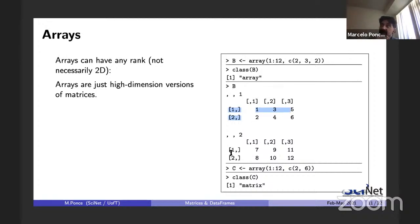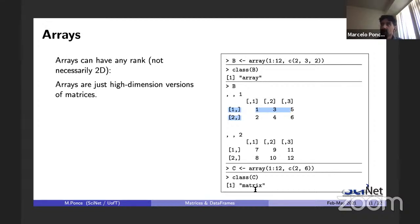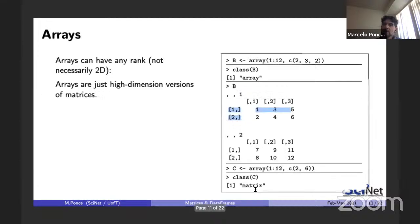If you use dimensions like `c(2,6)` instead, R recognizes a 2D layout and gives you a matrix class rather than an array. Most of the tricks and operations we saw for matrices also apply to multi-dimensional arrays. One won't always need higher-dimensional arrays, but now you know how to create them.